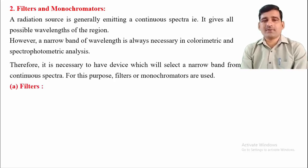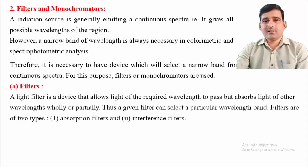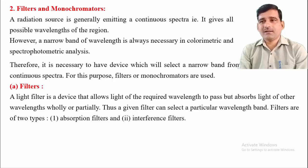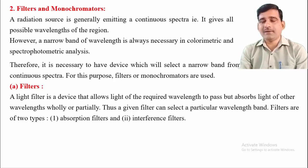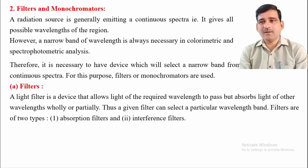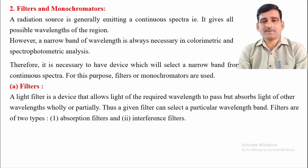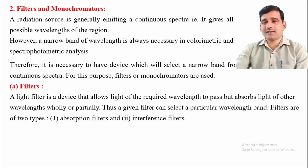A light filter is a device that allows light of the required wavelength to pass but absorbs light of other wavelengths — either wholly or partially — and thus a given filter can select a particular wavelength band. There are two types of filters: the absorption filter and the interference filter.